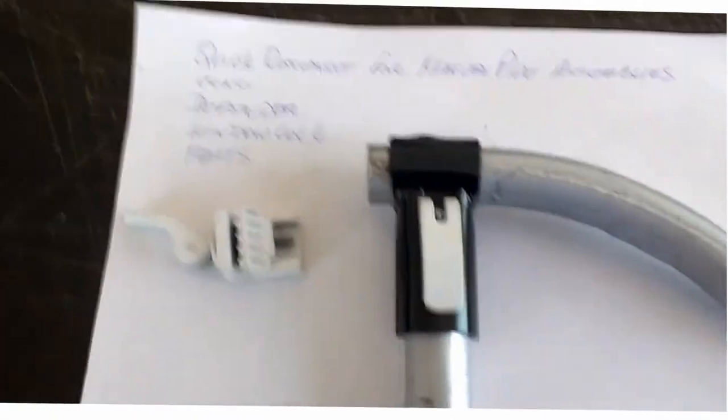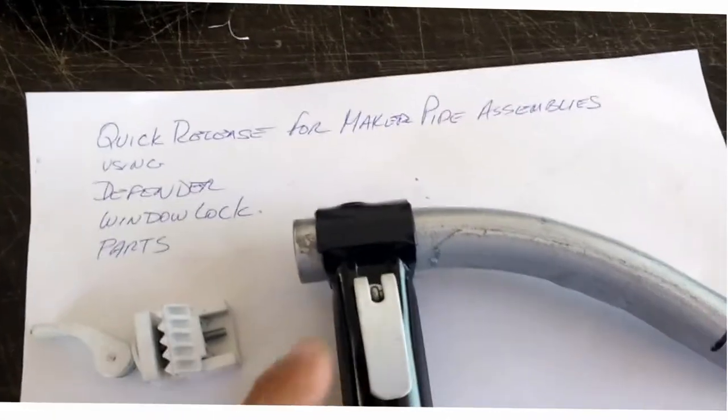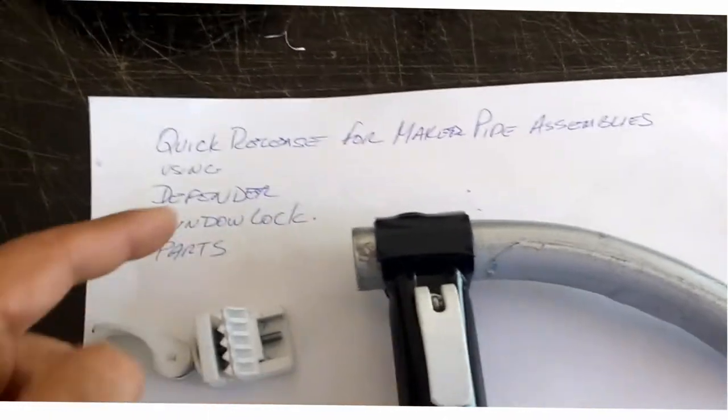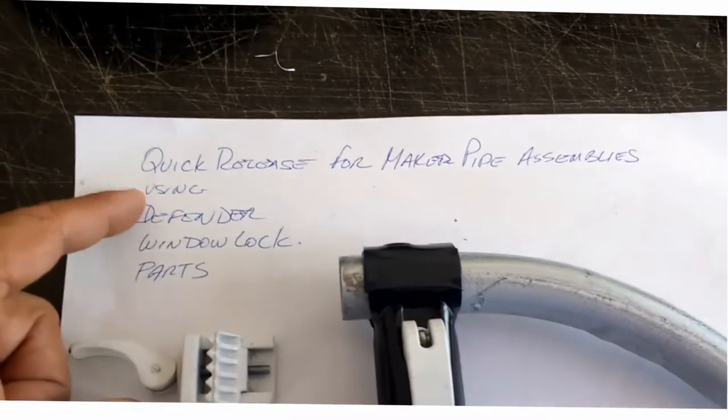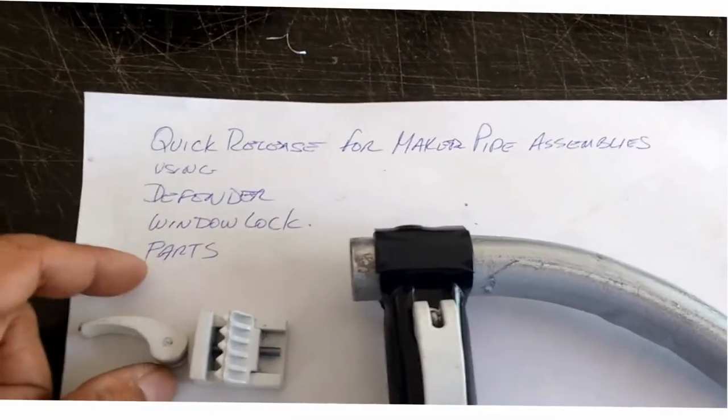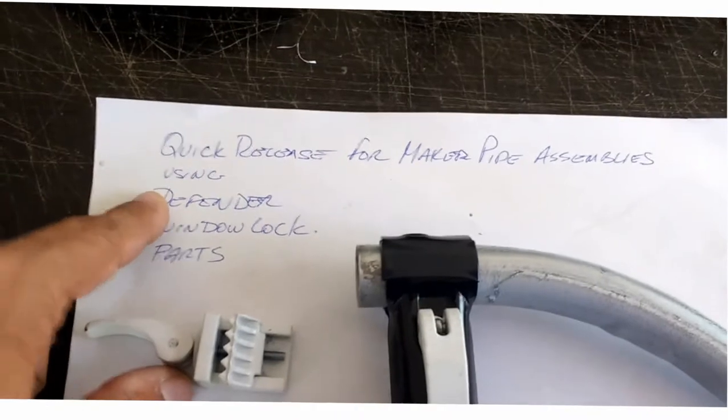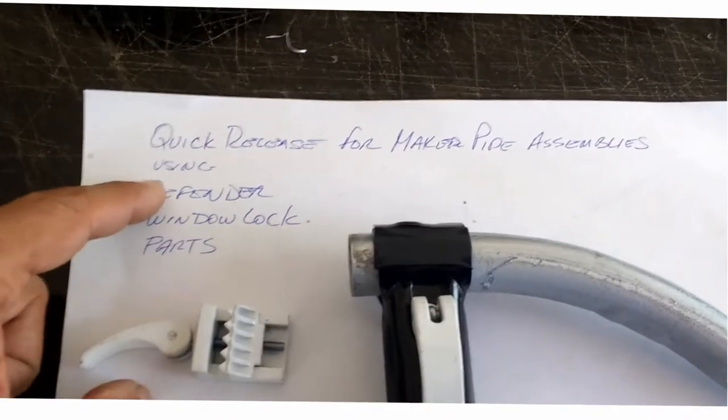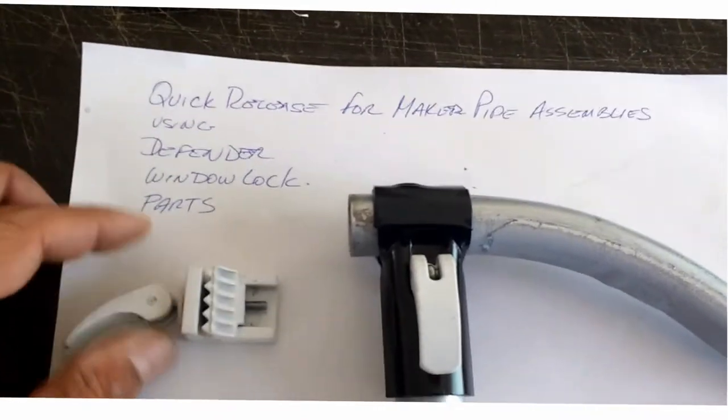This is Mario with MIM Microflight and in this video I'm going to show you how I am using this quick release. It's for a window lock from the company Defender. So these are the parts that I'm using on the MakerPipe assemblies for a quick release connection here.